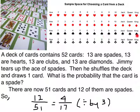Well, if he started out with 13 spades and he tore one of those up, now there are only 12. And there are 12 out of a total of 51. So we can say that 12 out of 51, and that reduces, if you divide by 3, to 4 out of 17. So he has a 4 in 17 probability of drawing a spade.